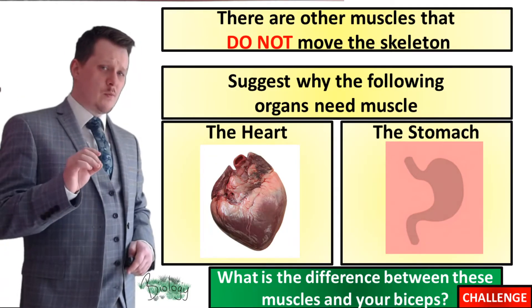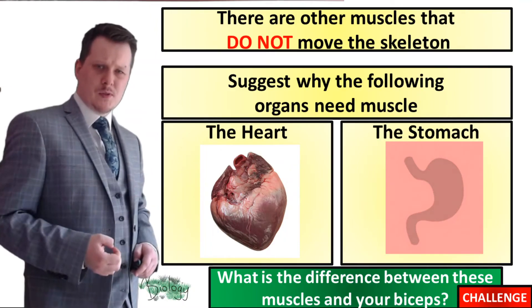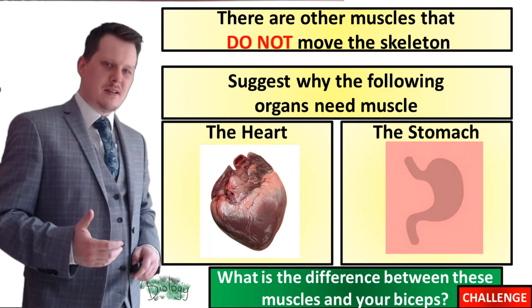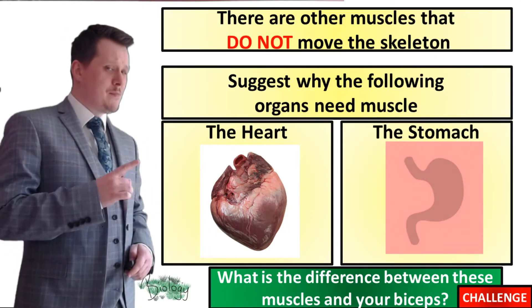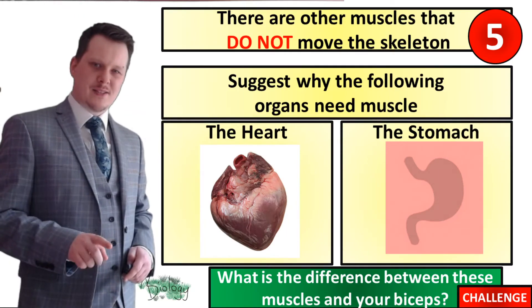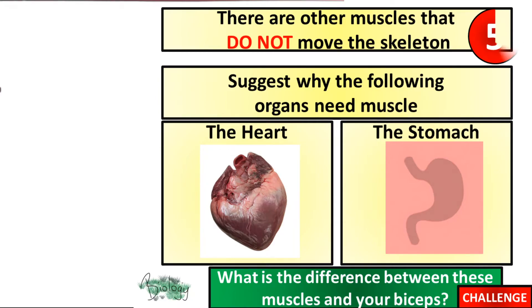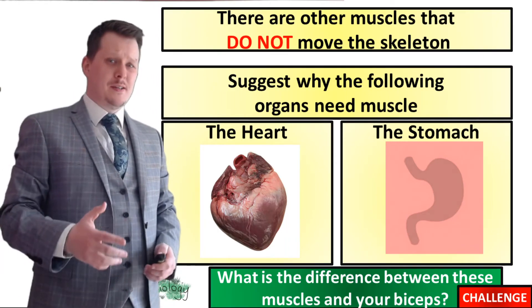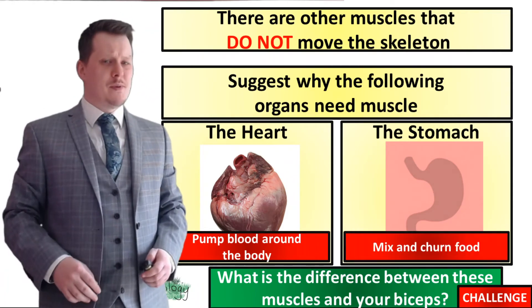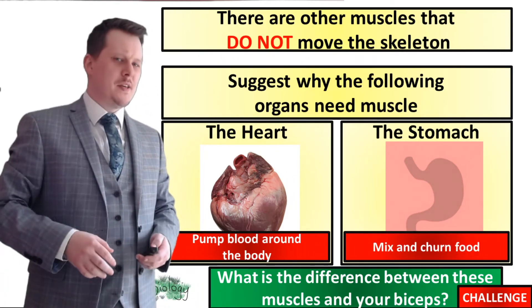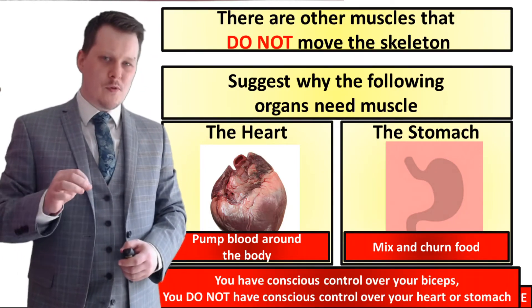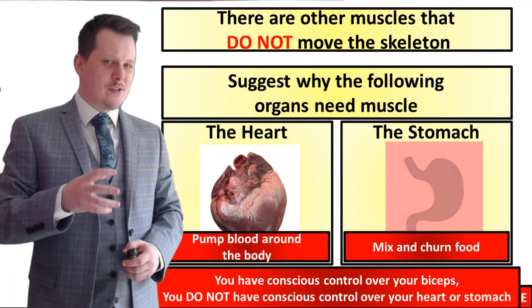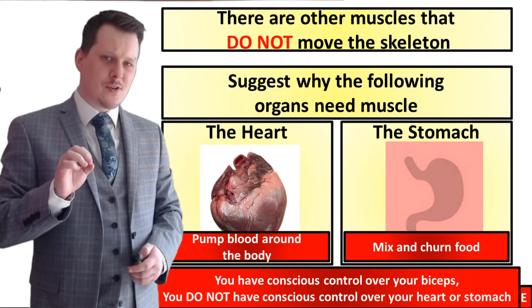There are some muscles in the human body that do not move the skeleton — examples being the muscles of the heart and the muscles of the stomach. The heart needs muscle so it can pump blood around the body, and the stomach needs it to mix and churn food. The difference between these muscles and your biceps is that you have conscious control of your biceps — you decide when to move them — whereas you do not have conscious control over the churning of the stomach or the beating of the heart.